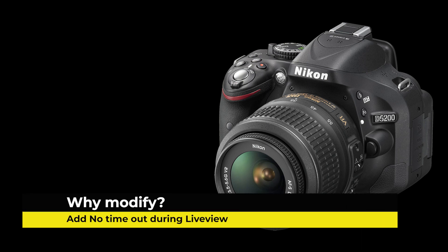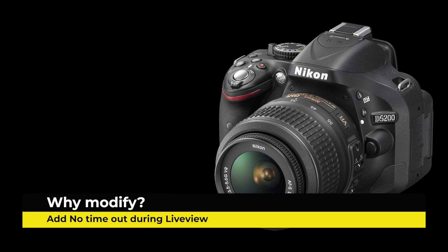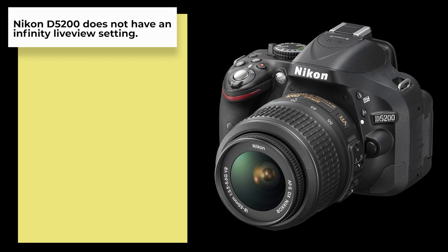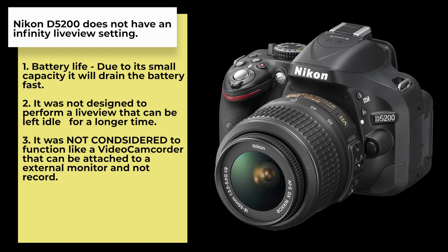Why would I want to modify the 15-minute live view of my camera to no time limit at all? First, the Nikon D5200 camera does not have an infinity live setting. Maybe because of the following considerations — maybe the battery life. Technically, it's a small battery capacity and using the live view will drain your battery fast. The workaround here is you can use an external power like an AC adapter that you can plug in, and this may work only if you have a fixed position near an accessible 220V AC outlet.